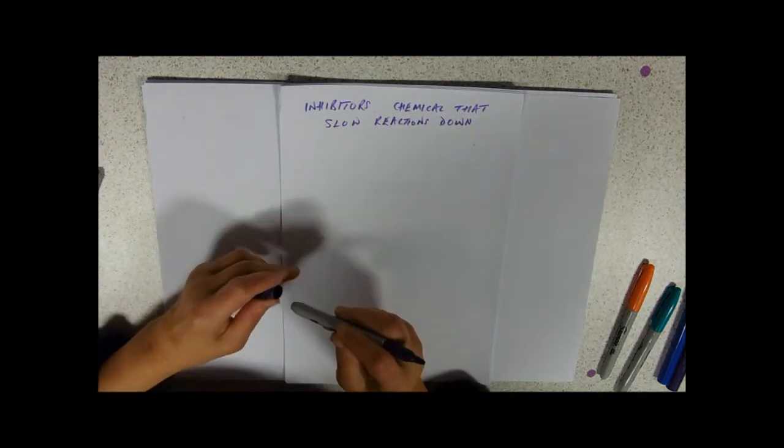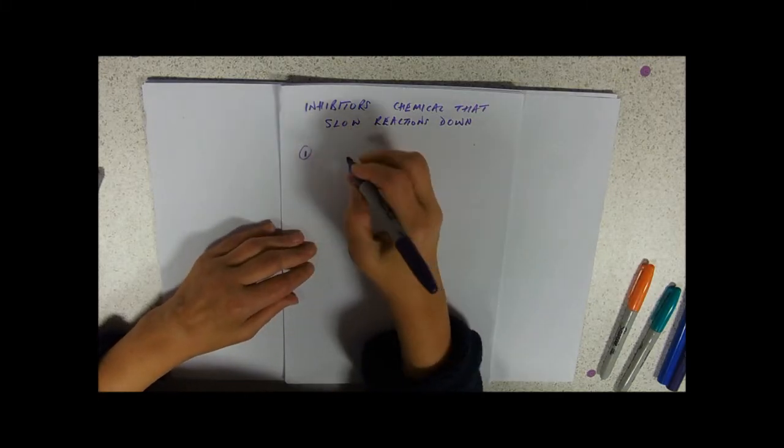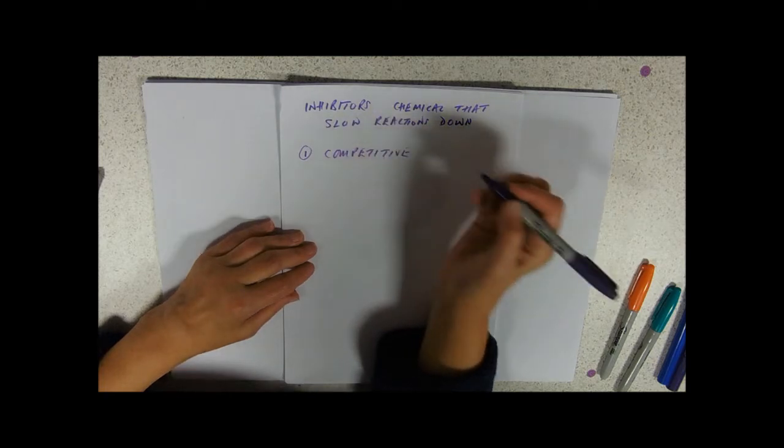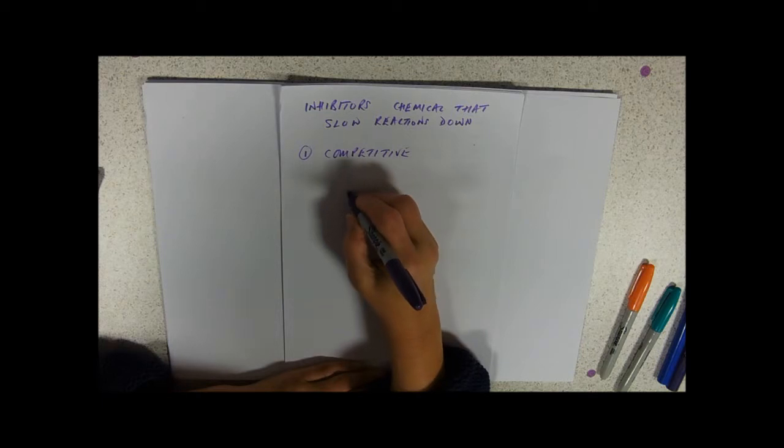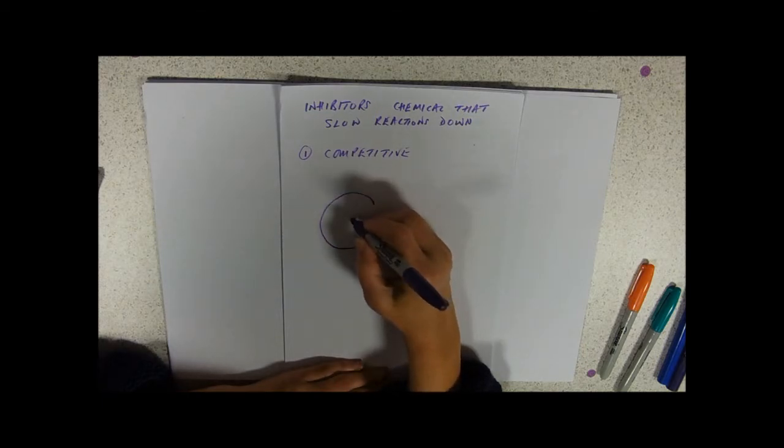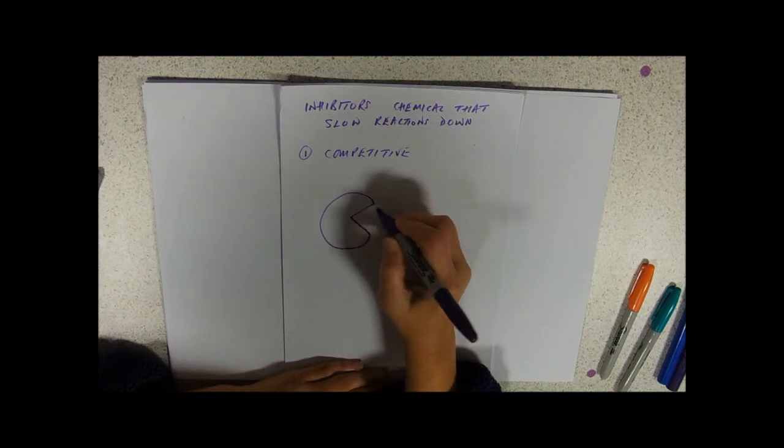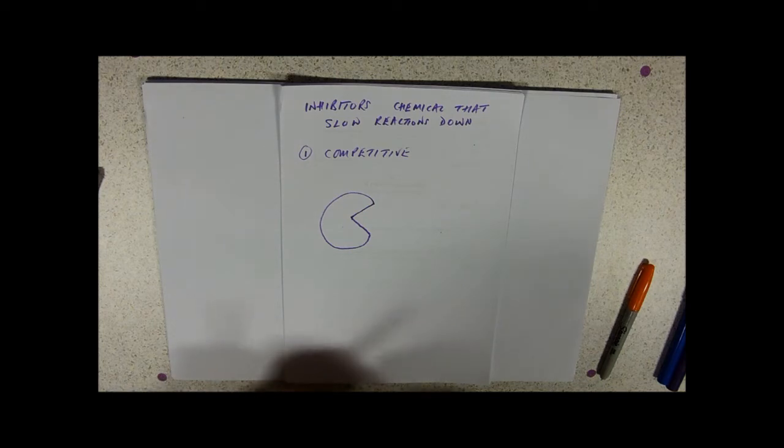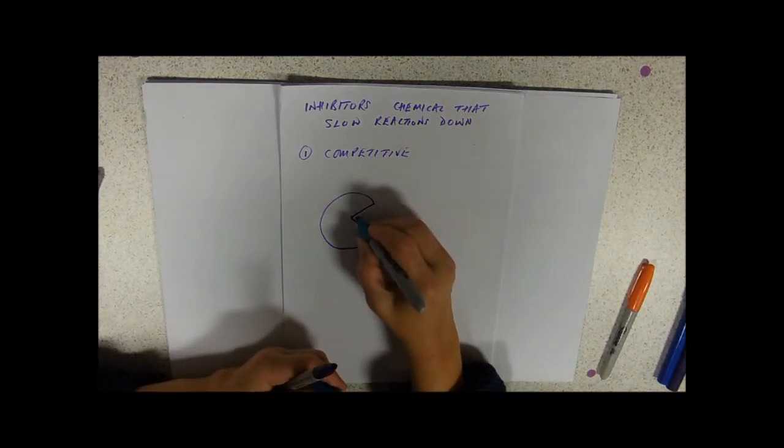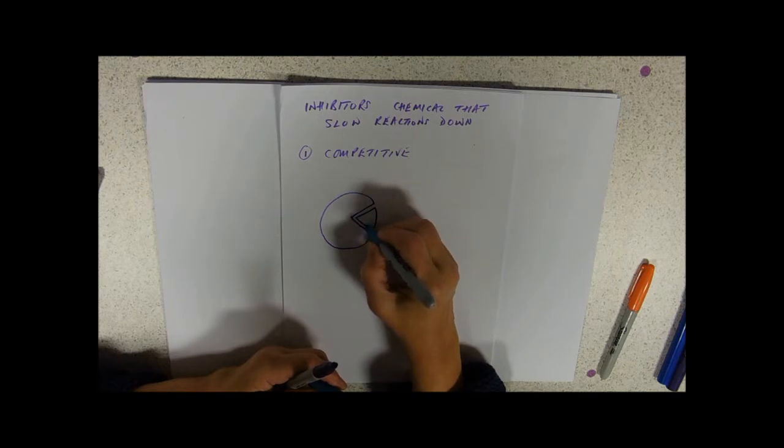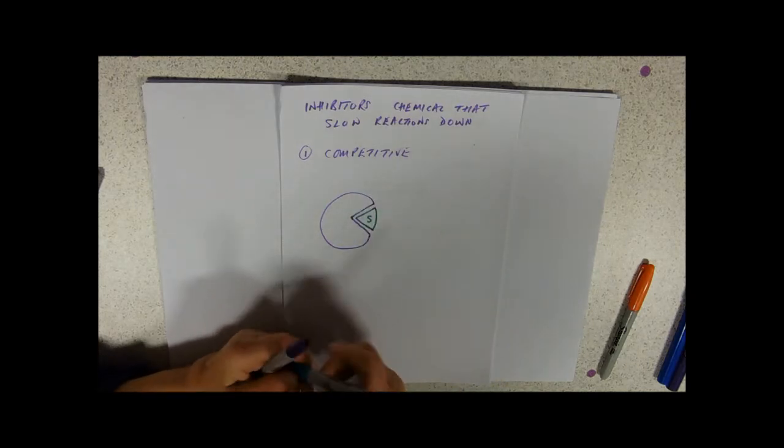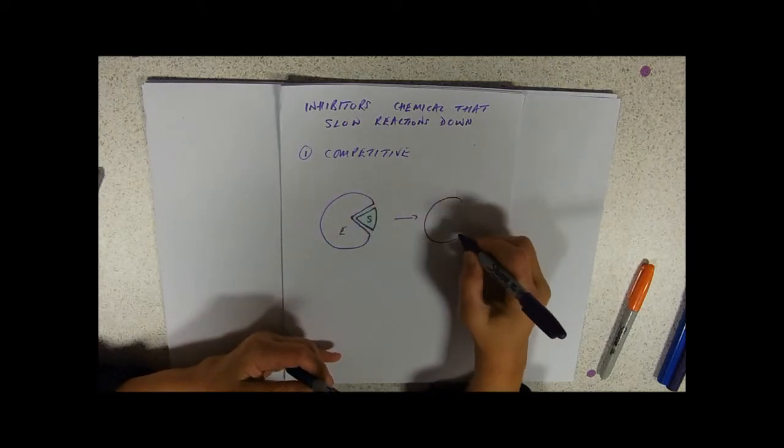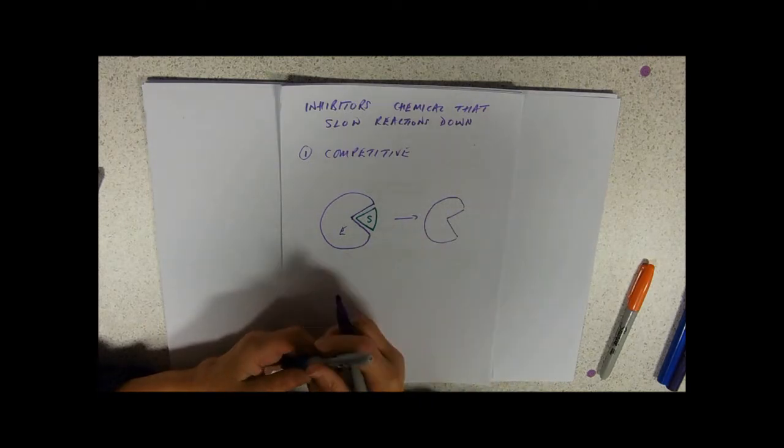Effectively there are two sorts and Type 1 that we can deal with is competitive. So just going back to our little Pac-Man, which is in my opinion the easiest way to draw an enzyme. We've got our active site and it fits perfectly with our substrate. Here we've got our enzyme substrate complex and we're going to get an enzyme and a product, whatever that is.